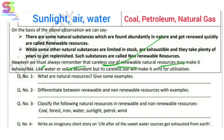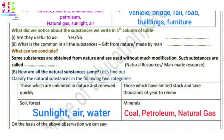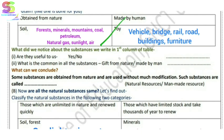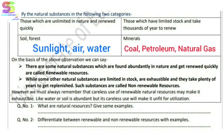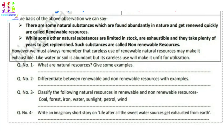Resources are of two types. The first question is: what are natural resources — give some examples. You will write the answer from here, and the examples of natural resources are the ones listed above. The next question asks for the difference between renewable and non-renewable resources with examples — you will note those examples from here.